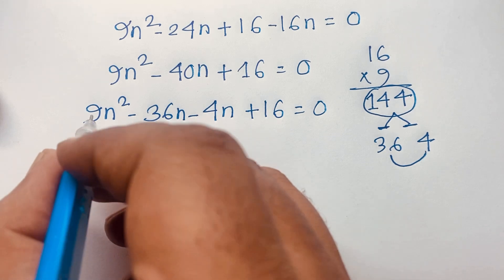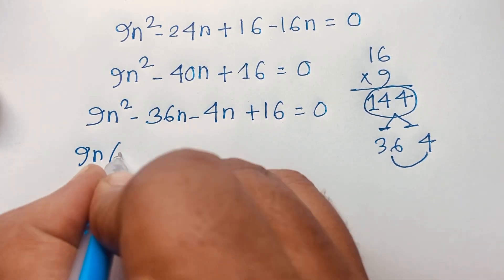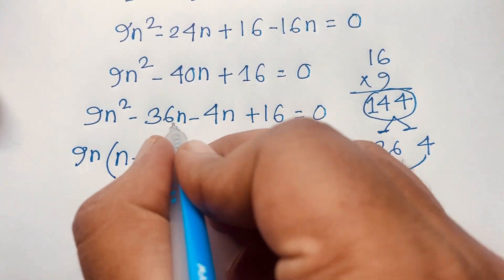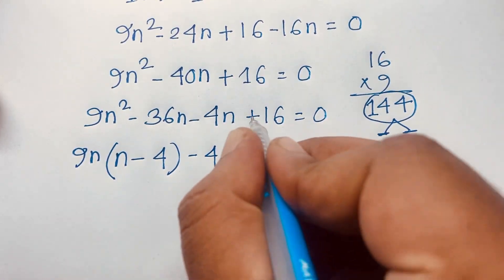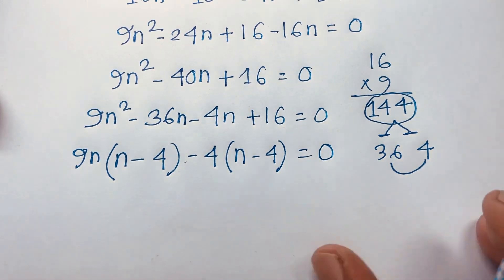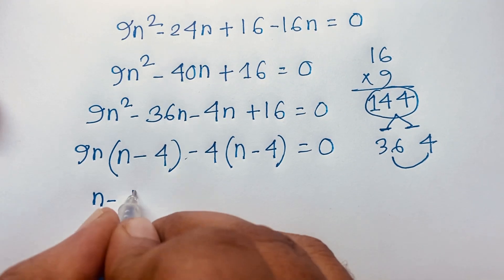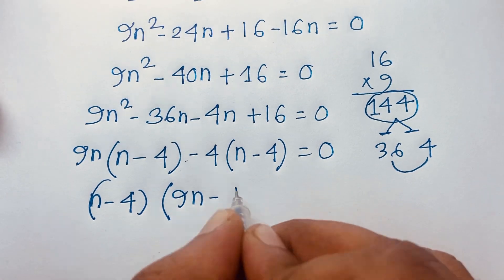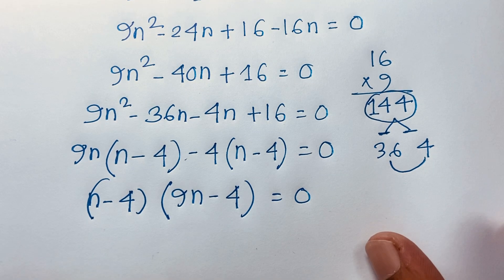So we split: 9n² - 36n - 4n + 16 = 0. Factoring: 9n(n - 4) - 4(n - 4) = 0, giving us (n - 4)(9n - 4) = 0. We have two cases.